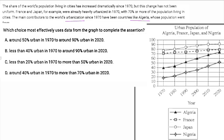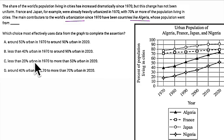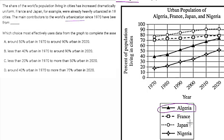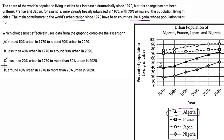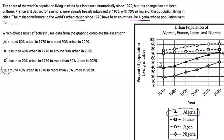This is a perfect example where you're going to need step three, because all of these support what I'm looking for — I can't eliminate any of them. The good news is I know I'm focusing on Algeria, so I'm just going to look at the triangle marker here for Algeria. It starts at around 40, so I can get rid of A and C. Less than and around 40 both work, so I do need to see where it ends in 2020. Looking at 2020, it's going to be around 70, a little bit higher than 70. So then it's D. Just like that, we got our answer using those three steps again.